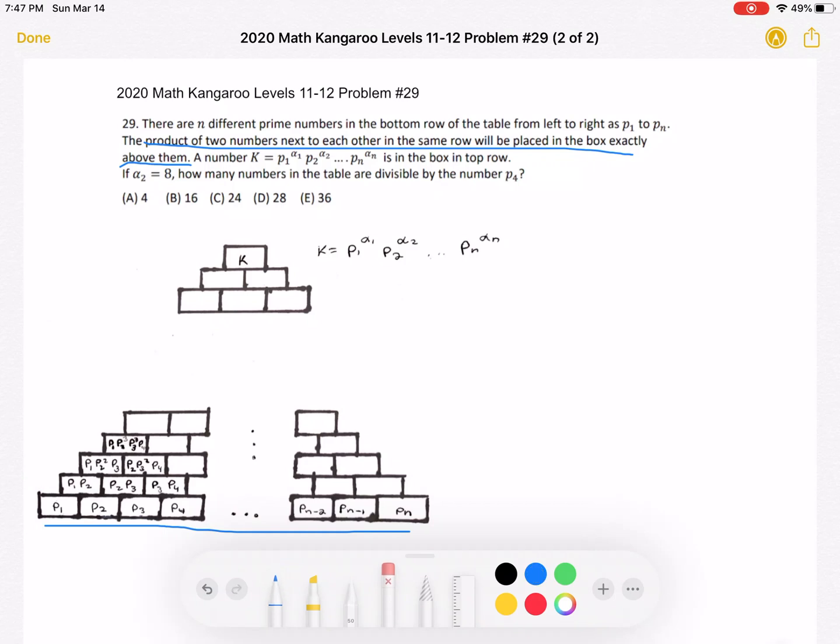So let's see what we notice about P2 specifically, because we know that in the top row, which is in this format, the number K, we know that this alpha 2 is equal to 8. So if we can find a pattern between the row number that we're looking at and the exponent of P2, then we can find how many rows our pyramid has. And that'll help us find what we're looking for, which is the number of numbers in the table that are divisible by P4.